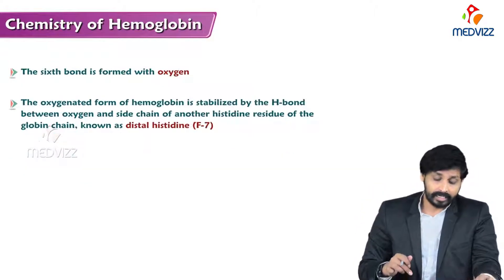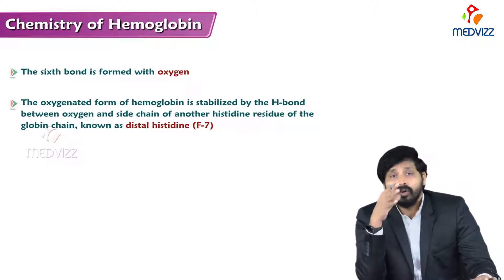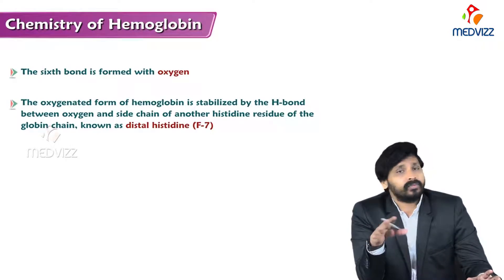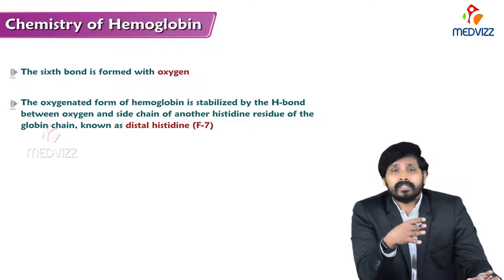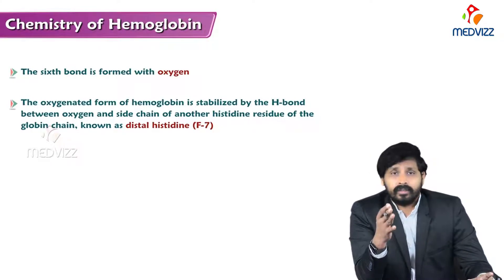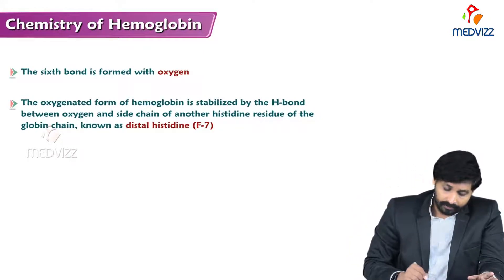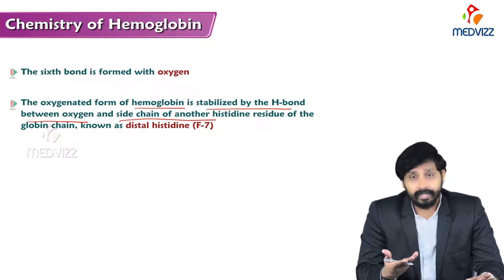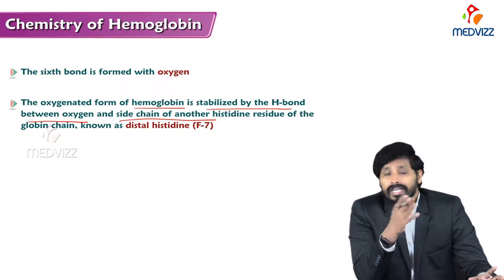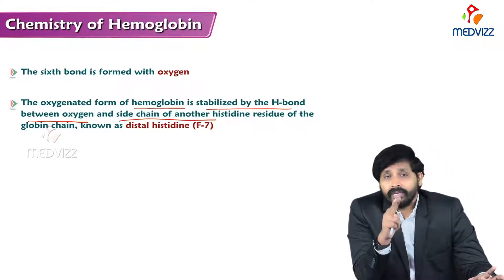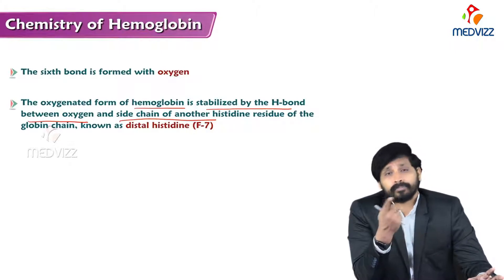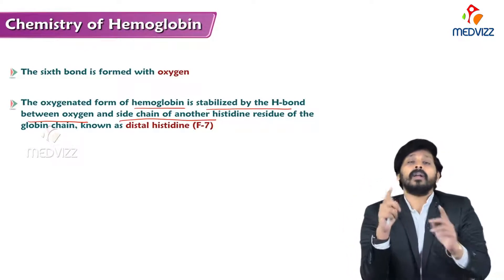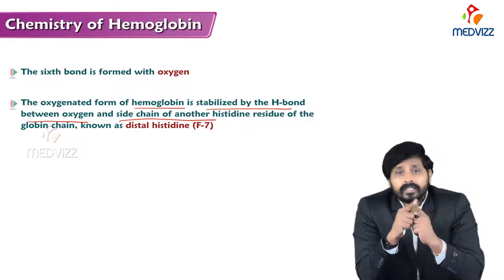Five valences of iron are now satisfied, and the sixth valency is satisfied by oxygen — this is the main crucial point. The oxygenated form of hemoglobin is stabilized by a hydrogen bond between oxygen and the side chain of another histidine. One valence of oxygen is attached to the iron molecule and the other valency is attached to another histidine of the globin chain, known as distal histidine. Proximal histidine attaches to iron; distal histidine attaches to oxygen.